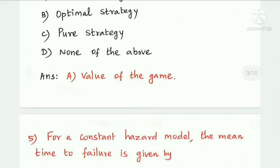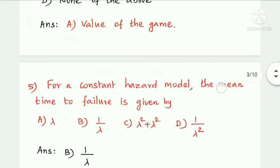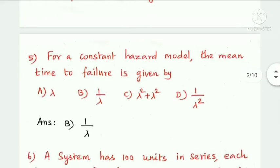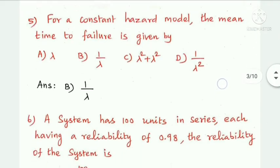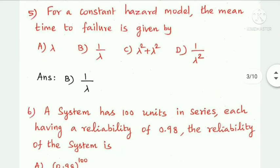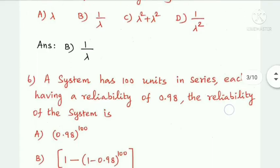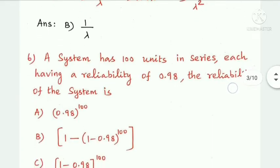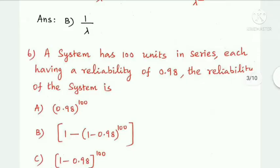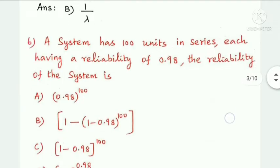Next question: for a constant hazard model, the mean time to failure is given by — lambda, 1 by lambda, lambda squared plus lambda, or 1 by lambda squared. Option B is the answer: 1 by lambda.